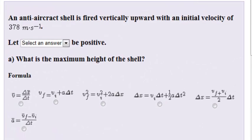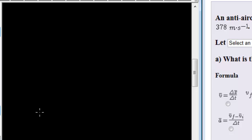An anti-aircraft shell is fired vertically upward with an initial velocity of 378 meters per second. Now what on earth is an anti-aircraft shell? It doesn't matter.